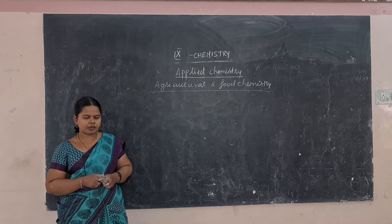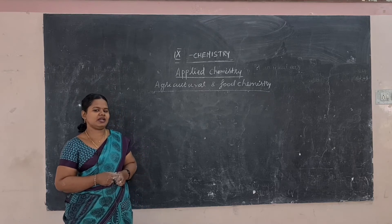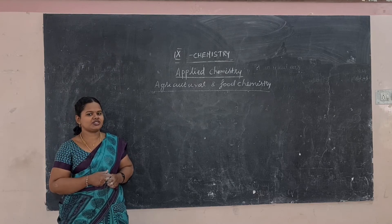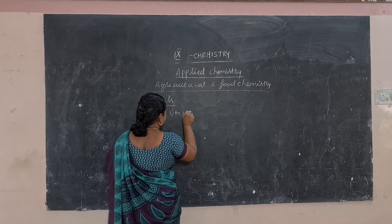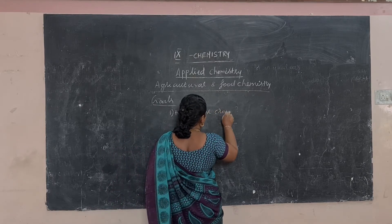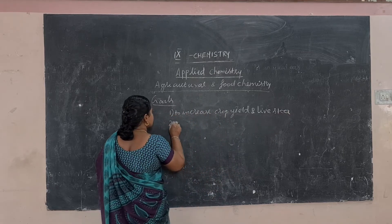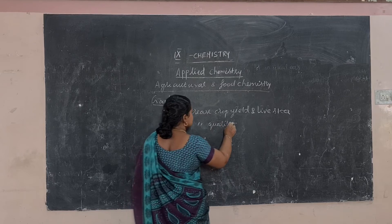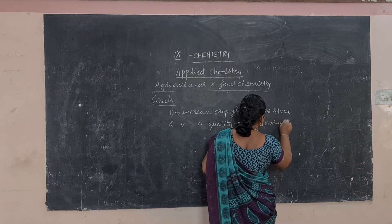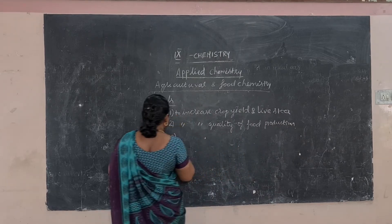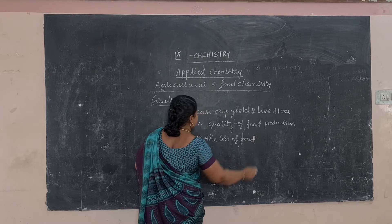Agriculture is the largest self-employment, so we have to enhance and improve it by applying scientific knowledge to increase yield. The goals of agricultural chemistry are: to increase crop yield and livestock, to increase the quality of food production, and to reduce the cost of food production.